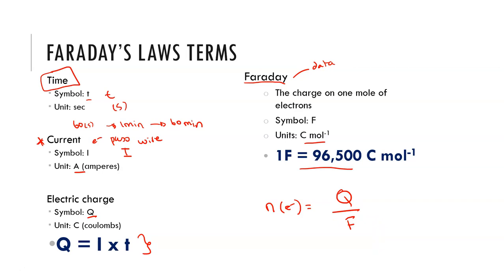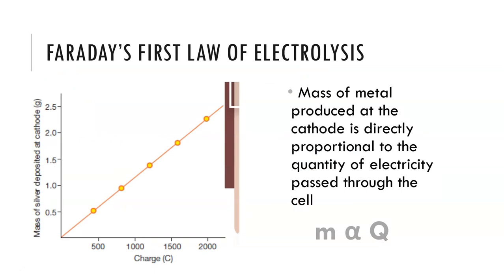Let's have a look at a couple of applications of this in questions. What this is telling us is that the mass of the metal produced at the cathode is proportional to the quantity of the electricity that passes through the cell and this makes sense. We need to have those electrons in order to reduce the metal. So if we have a smaller number of electrons passing through the cell we'll have a smaller amount of metal. So we can see here that this is looking at silver and the mass of silver deposited at the cathode increases as we increase the amount of charge that goes through the cell.